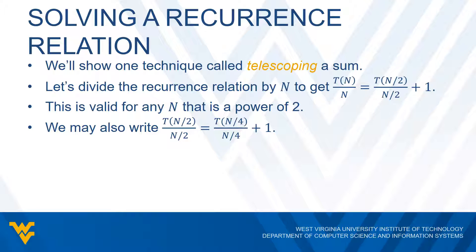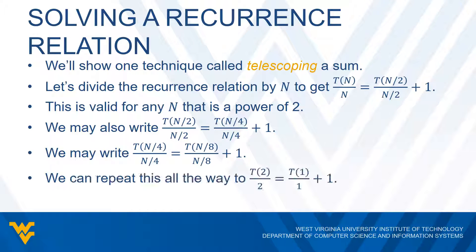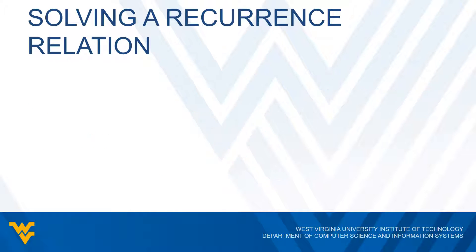We're allowed to do that, but we can also express T(N/4) divided by (N/4) as T(N/8) divided by (N/8) plus one. And we can just repeat this all the way down to T(2)/2, which is T(1)/1 plus one.